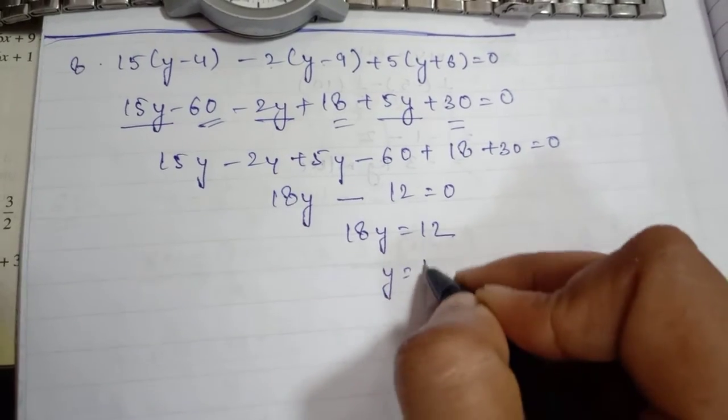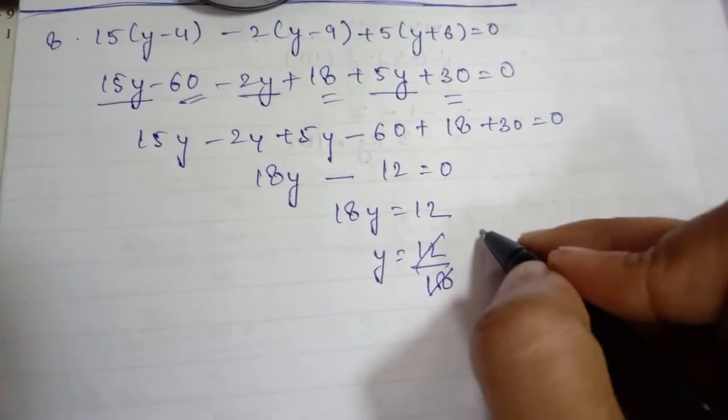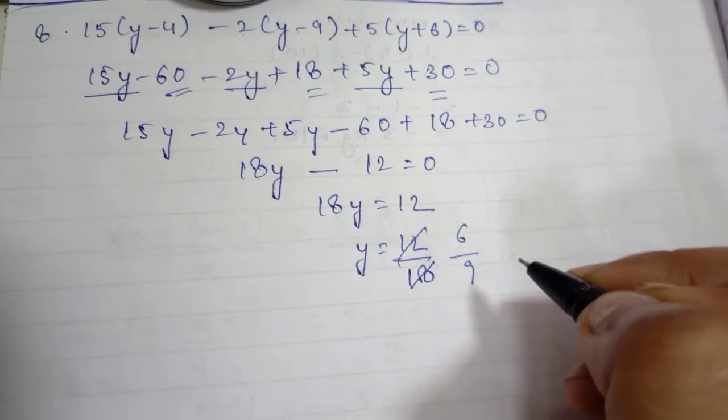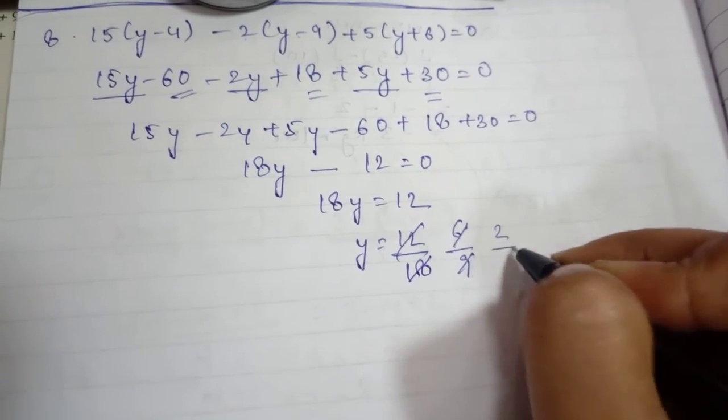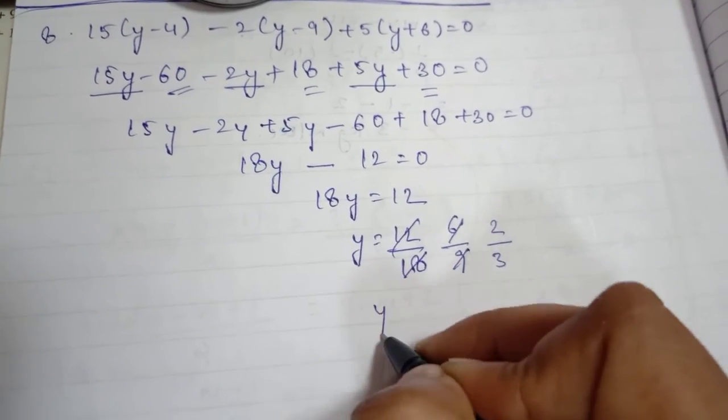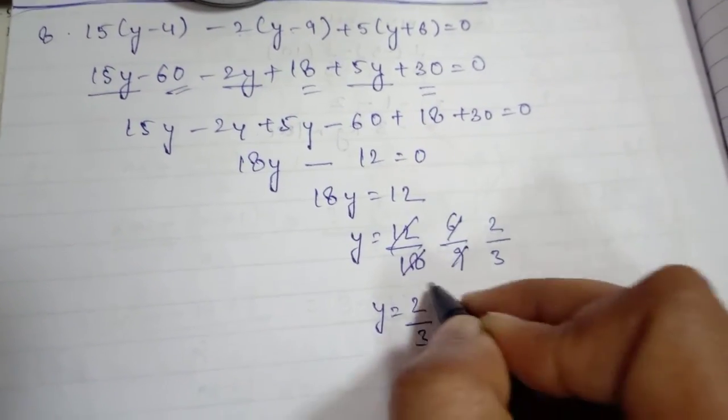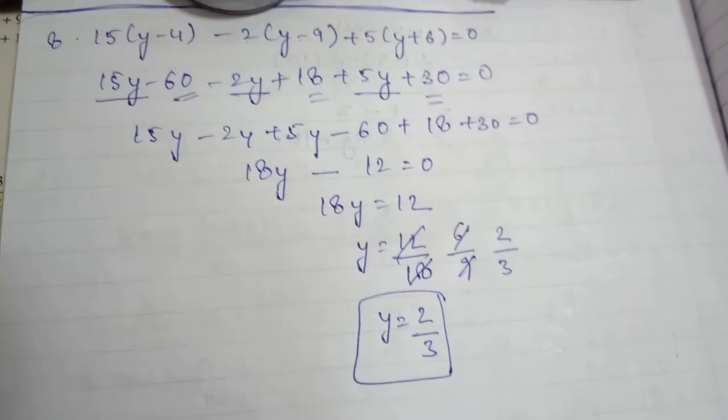y = 12/18. To simplify: 2×6 = 12, 2×9 = 18, so y = 2/3. This is your answer.